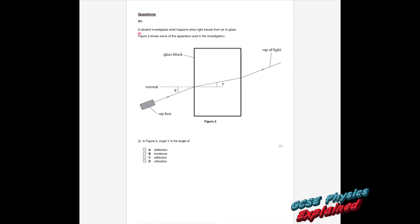Question 1. A student investigates what happens when light travels from air to glass. In figure 2, angle Y is the angle of refraction. That's an easy question. You'll see this question again and again as I go over this paper, so that proves that they use the same questions every year. By practicing the past papers before you go into the exam, you'll increase your success in the exam.